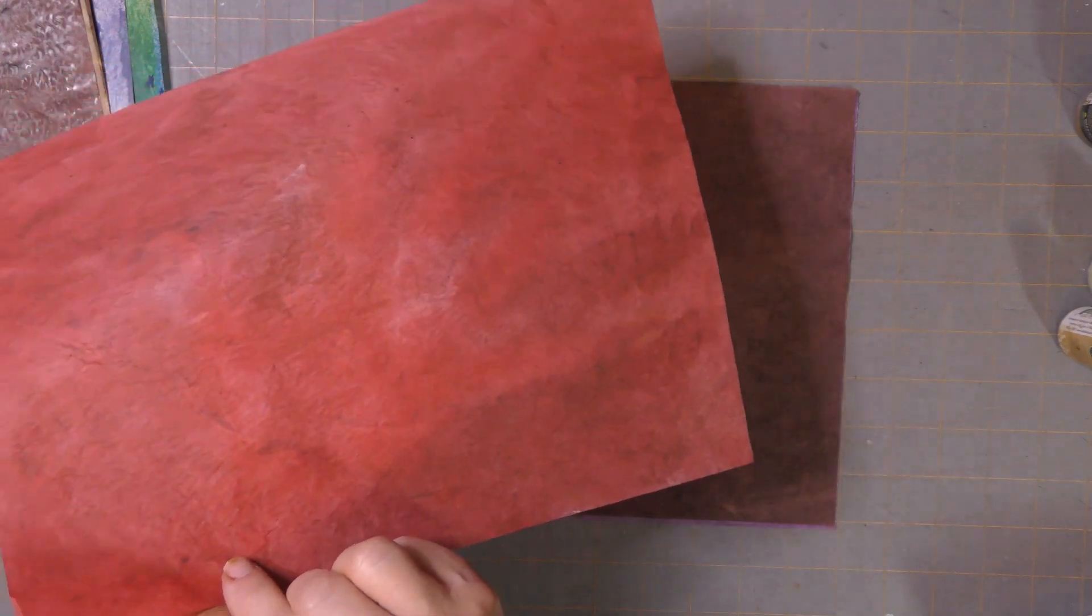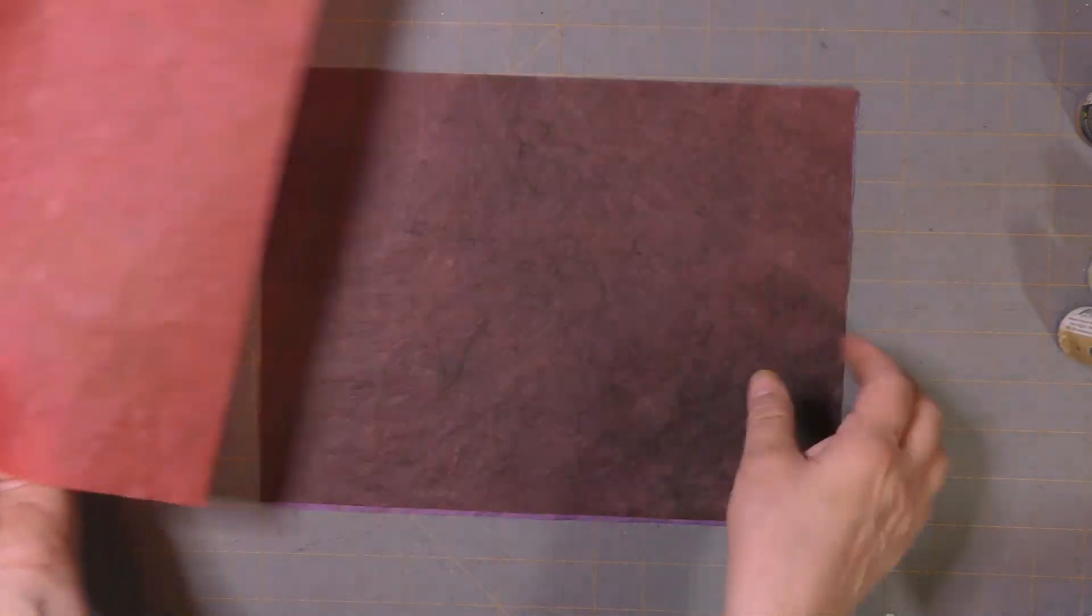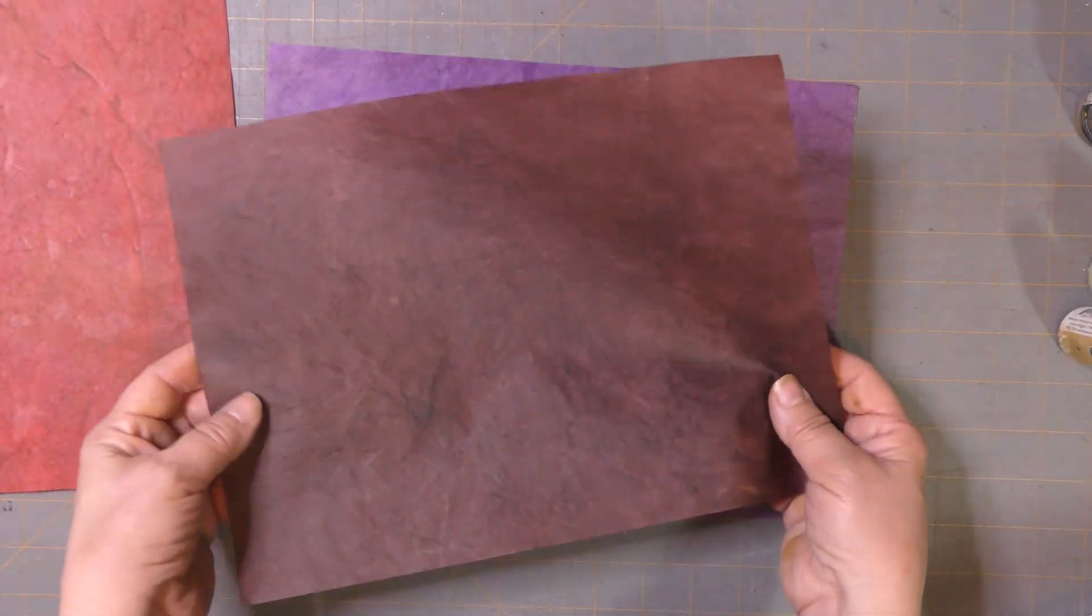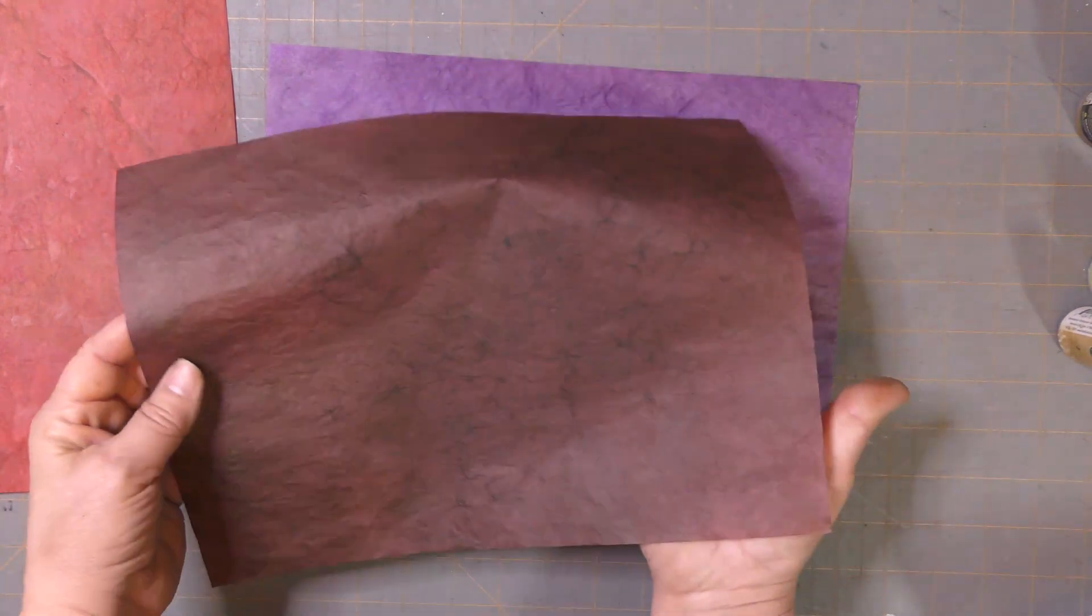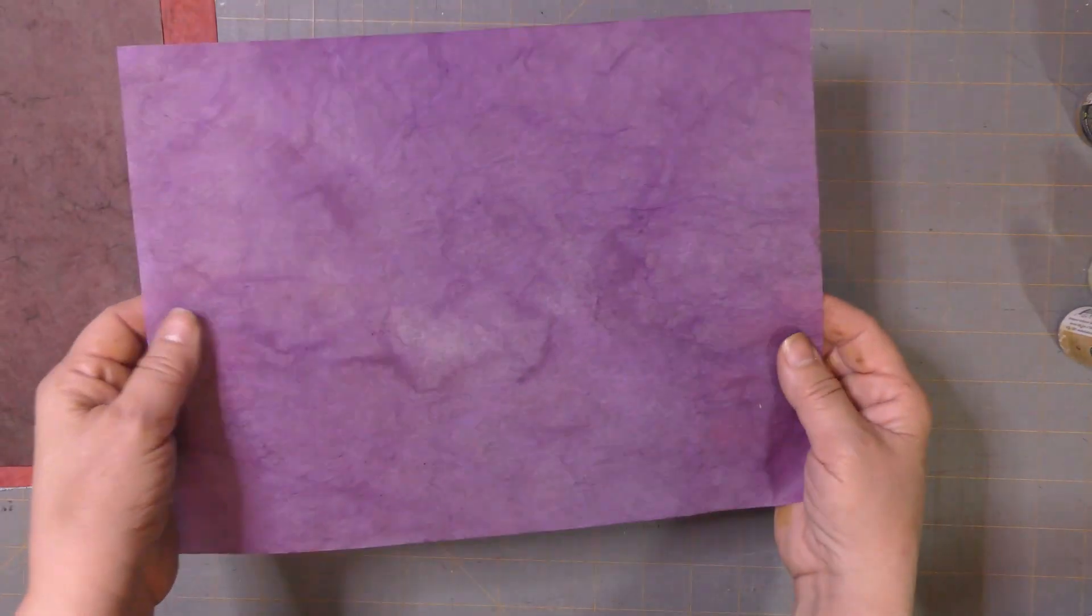This is also a Rit dye that I already had, and it's red. You can see some mottling there. This is the chocolate brown again, another sample, and this is some purple that I had.